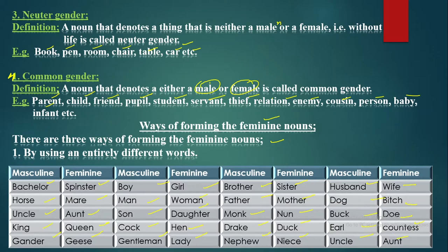Let me explain some of the difficult words. 'Gander' is the masculine of 'goose' — it is a bird like a duck. 'Monk' refers to a Christian who spends all his time worshipping God; the feminine for that is 'nun'. 'Drake' is the male of the duck. 'Earl' refers to a wealthy person, mostly used in the United Kingdom; the feminine is 'countess'.